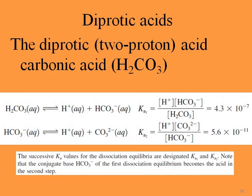The first dissociation is always stronger than the second. The successive KA values are designated KA1 and KA2. Note that the conjugate base HCO₃⁻ of the first dissociation equilibrium becomes the acid in the second step — so whatever is the conjugate base in step one becomes the acid for step two.